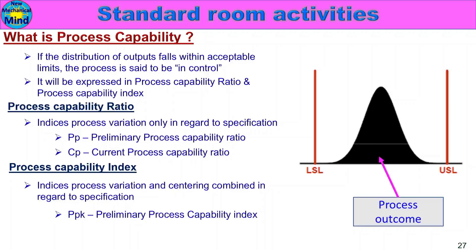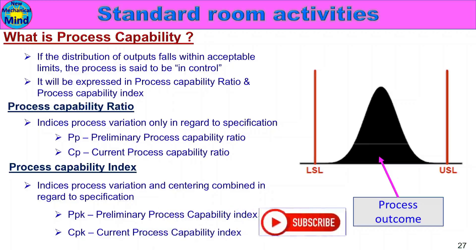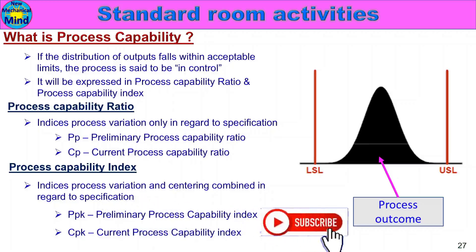PPK is the Preliminary Process Capability Index used in the Initial Process Study. CPK is the Current Process Capability Index used in the SPC Study. These indices — Process Capability Ratio and Process Capability Index — are identified using the 7 rules for control chart.